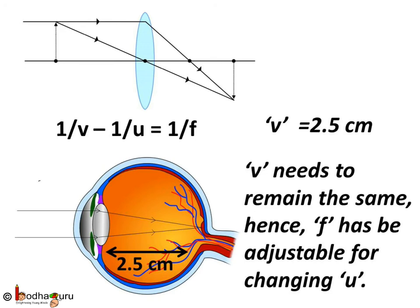Hence, f, i.e. focal length, has to be adjustable for the changing u, i.e. object distance. And we know, this is taken care of by the ciliary muscles.